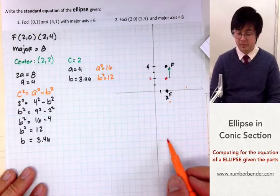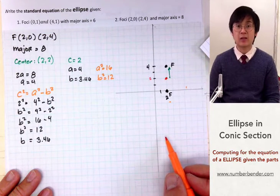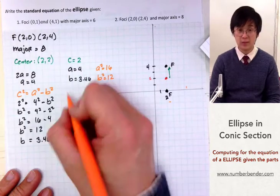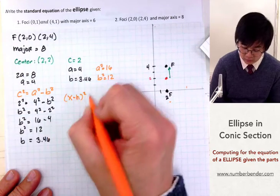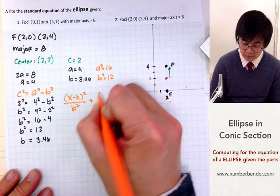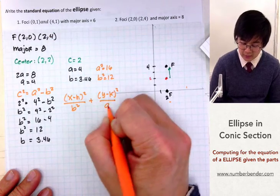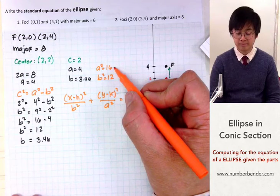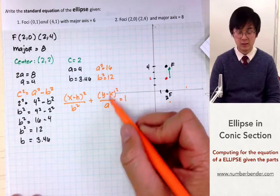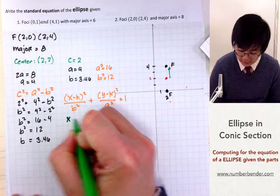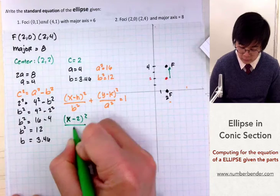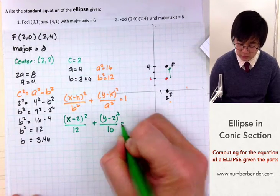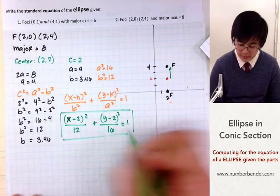Since this is a tall ellipse, we switch our denominators — the larger value of 16 goes with y and 12 goes with x. So the formula becomes: (x minus h) squared over b squared plus (y minus k) squared over a squared equals 1. Our standard equation is (x minus 2) squared over 12 plus (y minus 2) squared over 16 equals 1. This is our standard form.